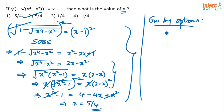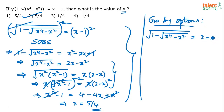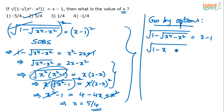Before substituting, let me simplify the left-hand side. We have root over 1 minus square root of x power 4 minus x squared equals x minus 1. Take x squared common inside the root: we get x squared times x squared minus 1. Taking x outside, we have 1 minus x times square root of x squared minus 1 equals x minus 1. Now substitution will help you verify it faster.